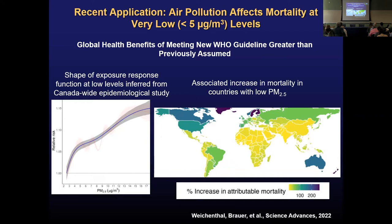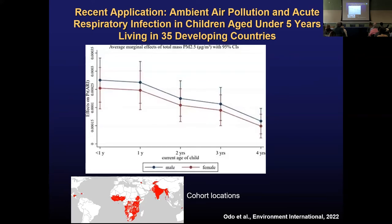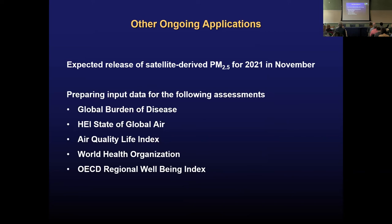This adds to the body of evidence about the association of PM2.5 at low or very low concentrations. The implications for health impact assessment are that the overall burden of disease associated with PM2.5 in clean countries — such as in North America or Northern Europe — could be even larger than previously assumed, and the benefits of meeting a WHO guideline could be even greater. Another study led by Daniel Odo and Luke Nibbs at the University of Sydney examined the association of PM2.5 with respiratory infection in young children in developing countries in the global south, finding an association especially for very young children, indicating the many ways in which long-term exposure to PM2.5 is associated with various health endpoints.